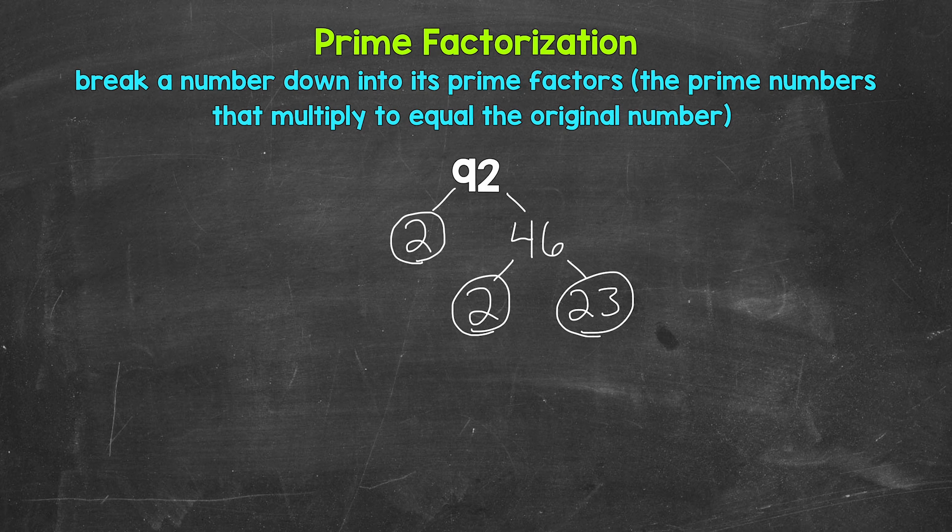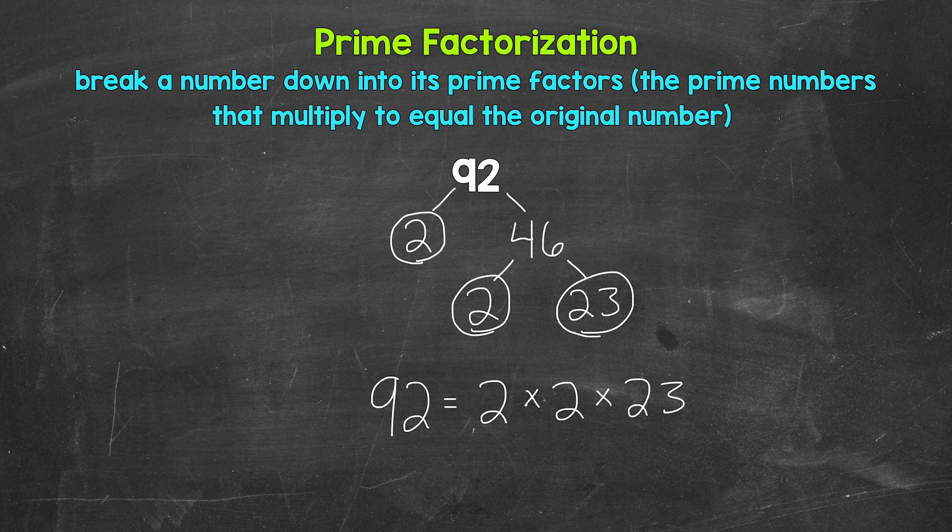So let's write this out as 92 equals. And then we can write out our prime factors in order from least to greatest here. And we are multiplying them. So we have 2 times 2 times 23.